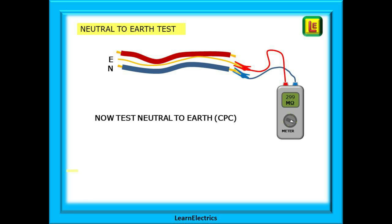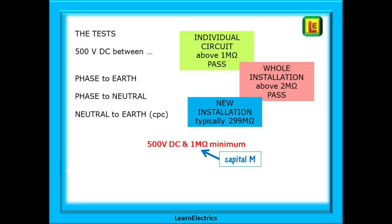More about the tests soon. So just a quick recap: we will test at 500 volts DC, testing from phase to earth, from phase to neutral, and from neutral to earth. For a pass, an individual circuit should measure above one megaohm of resistance for any of the tests. And the whole installation should have a combined parallel resistance above two megaohms. A typical new installation would give the test meter maximum — 199 or 299 megaohms for example, a lot higher with some modern meters.